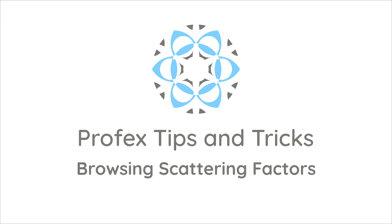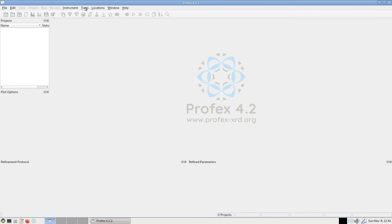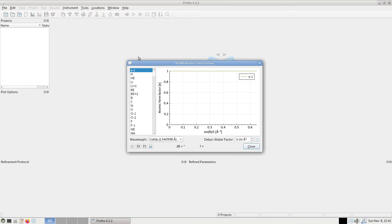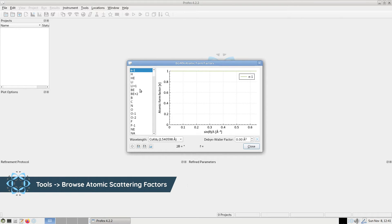Profex contains some tools for purely educational purposes, and one of them is the tool Browse Atomic Scattering Factors. This opens a dialog in which we can display the atomic scattering factors as a function of the diffraction angle.